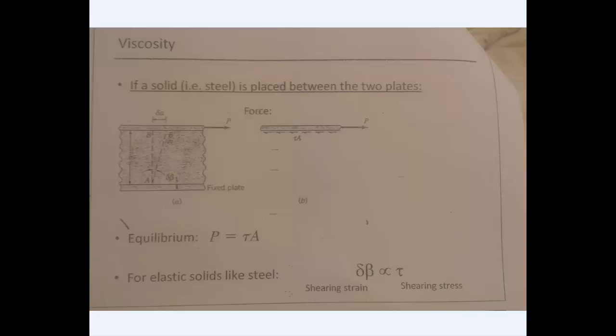Let's say we have a fixed plate, this one, and a moving plate. So when I move this plate, it will make an angle delta beta. If we have a point B here, it will move to a point B prime with a distance delta A.